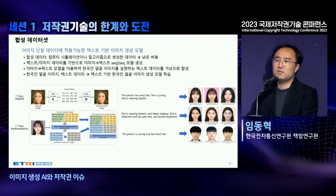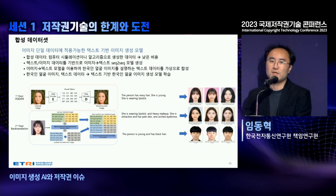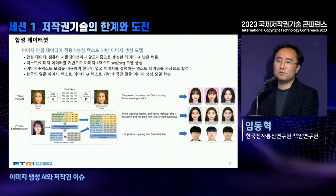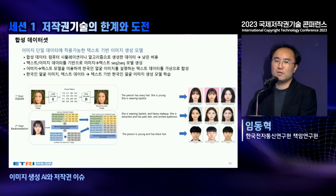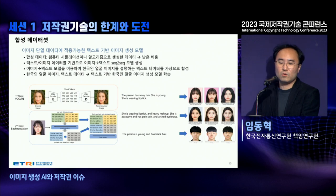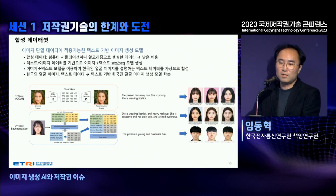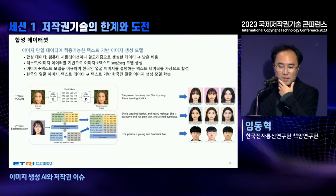Text-based image generation models have become very common, but text-based image datasets are very expensive and not easily available. So we thought about how we can create text and image data as a pair — specifically using Korean faces. Based on the text and image data, we generated an image-to-text sequence-to-sequence model. If you input an image, you can get the relevant text. So we collected Korean face images and created a Korean face image-generating AI. Some call this the back-translation approach.